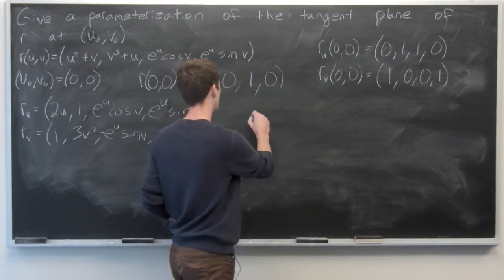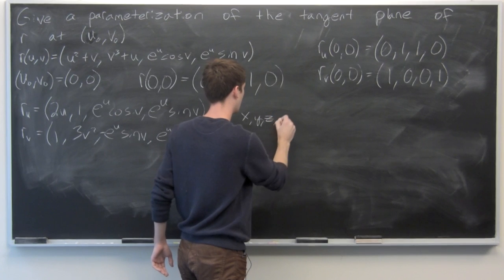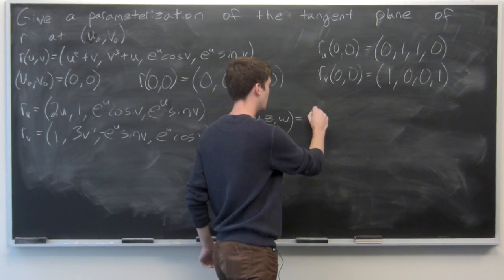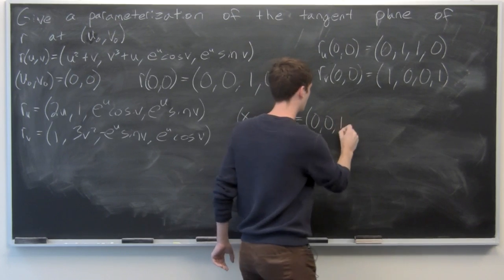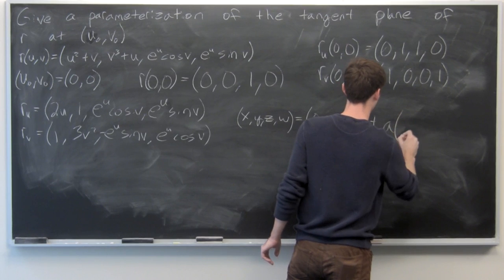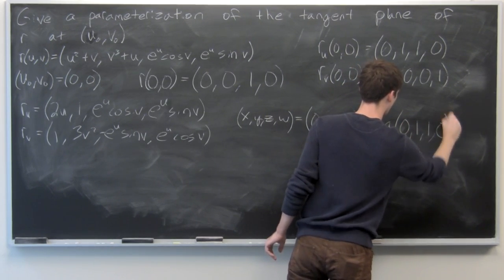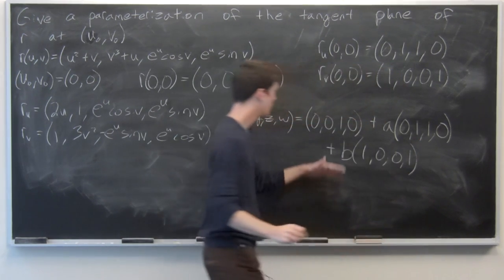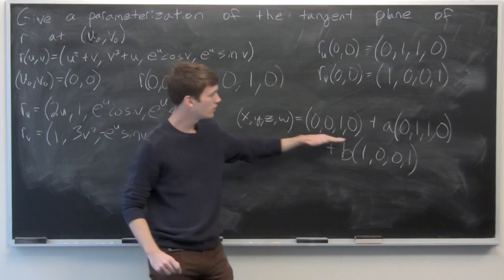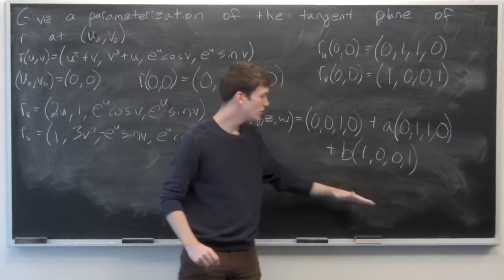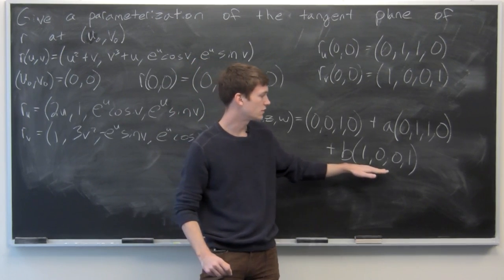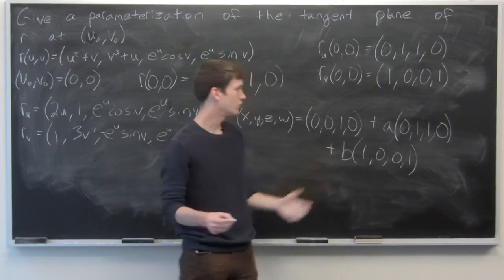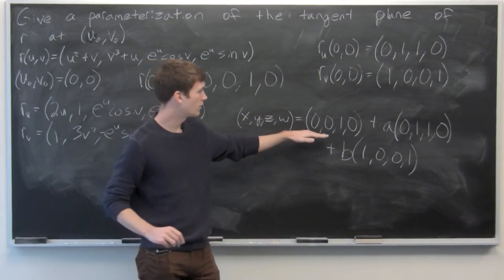Our tangent plane is the set of points (0,0,1,0) + a(0,1,1,0) + b(1,0,0,1), where a and b are arbitrary parameters. Any a and b will produce a tangent vector at the point (0,0,1,0).